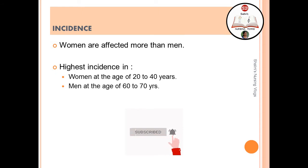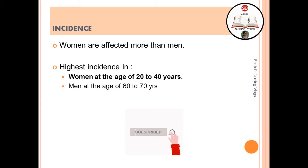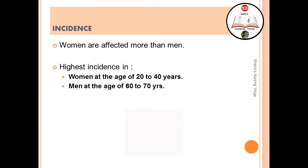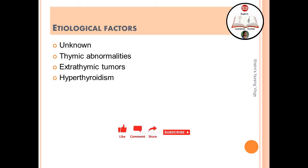Regarding incidence, women are affected more than men. The highest incidence in women is at the age of 20 to 40 years, and in men it is at 60 to 70 years of life. Etiological factors are largely unknown, but there are certain thymic abnormalities which are common, as well as extra-thymic tumors such as small cell carcinoma and Hodgkin's disease.